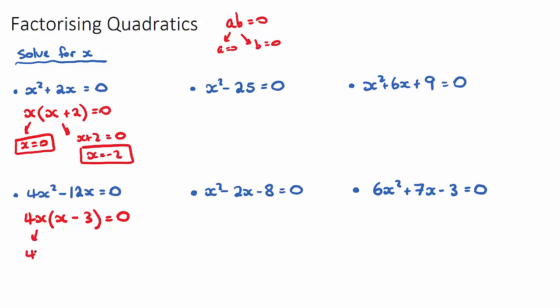From here, 4x can be equal to 0 as we now have our correct factorized form or x minus 3 can be equal to 0. And then x will be equal to 0 when we divide the 4 underneath. That's one solution. And x can equal 3 is the other solution for x.